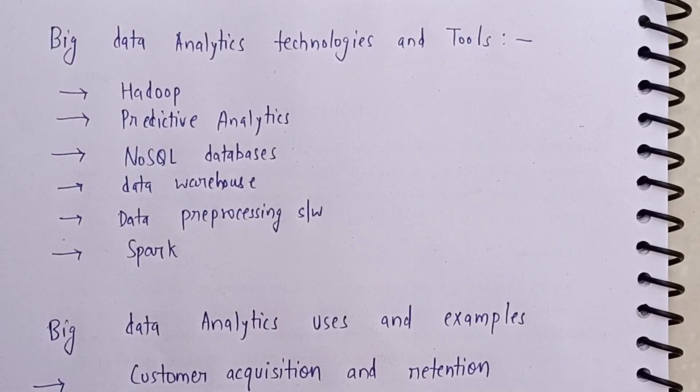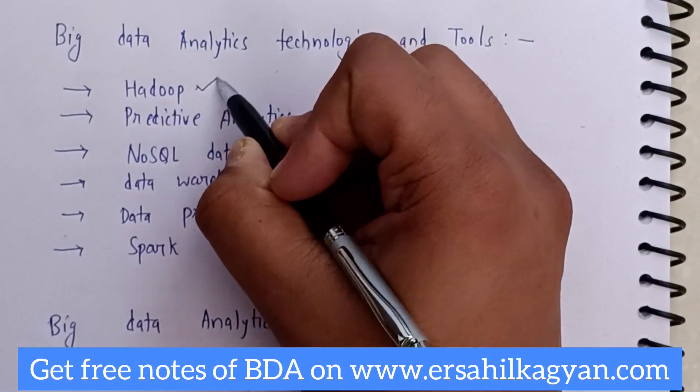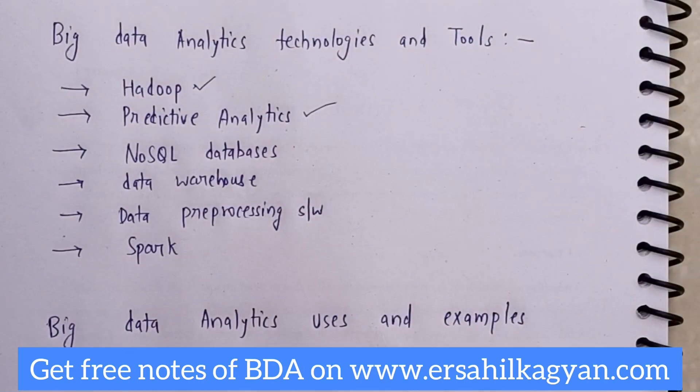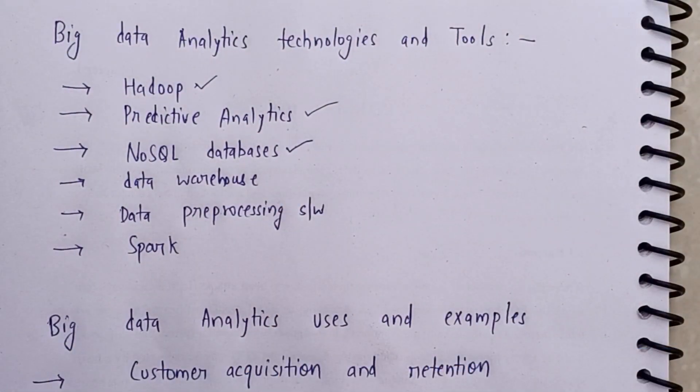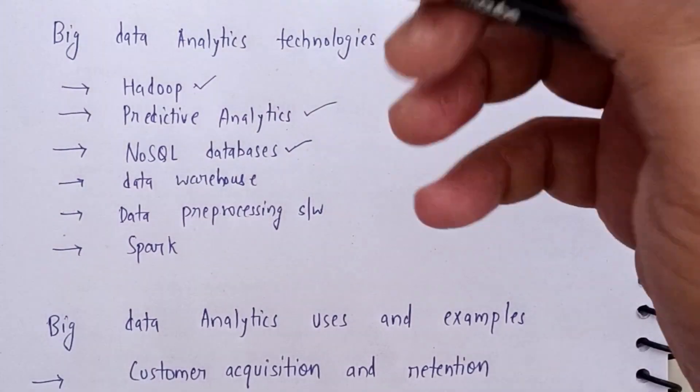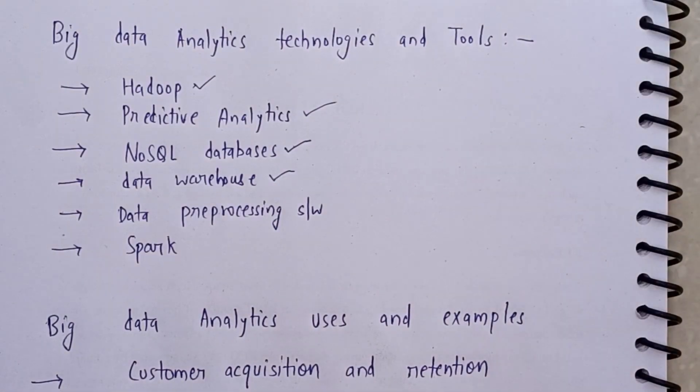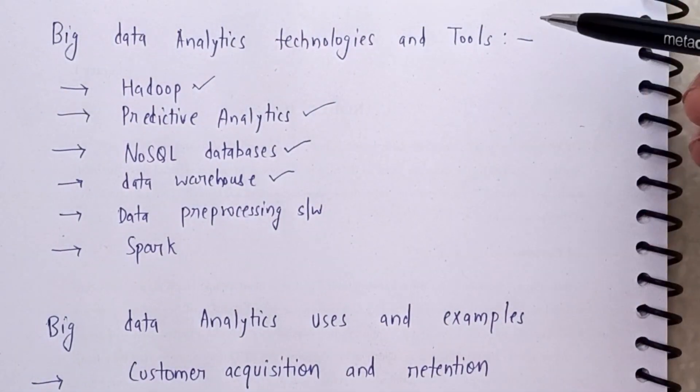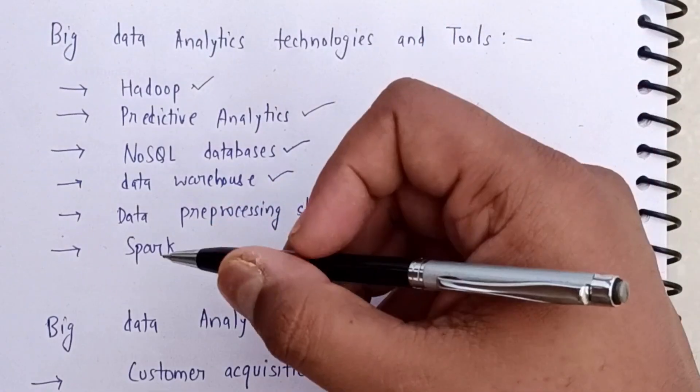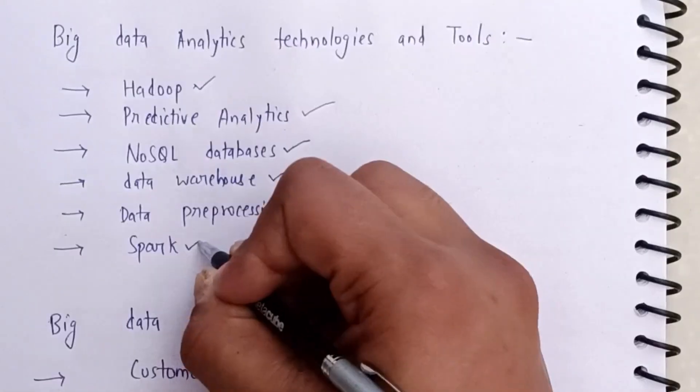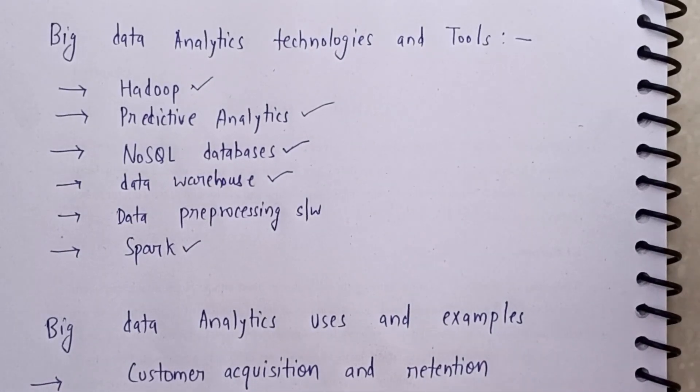Now there are so many tools of big data analytics and technologies that we see - like Hadoop, predictive analysis for predictions, NoSQL databases where relationships are not found, data warehouses where data is stored in different warehouses, data preprocessing softwares, and Spark which uses machine learning frameworks. Now we will see big data analytics uses and examples.